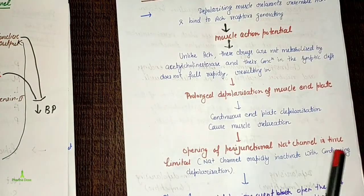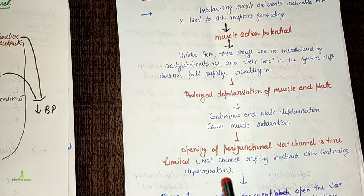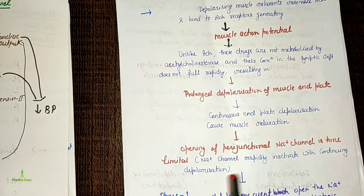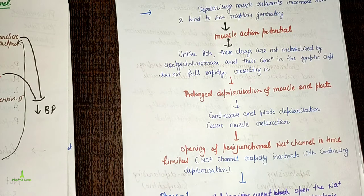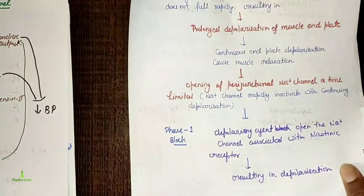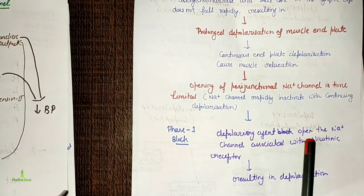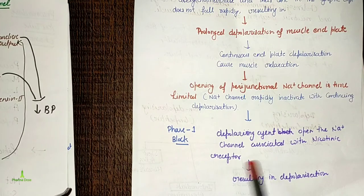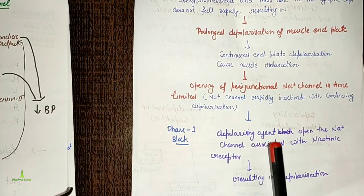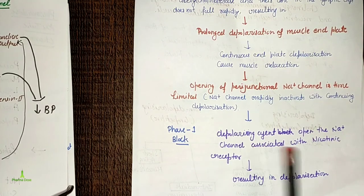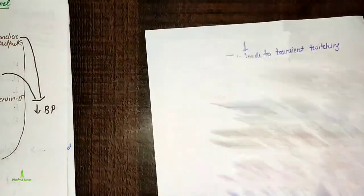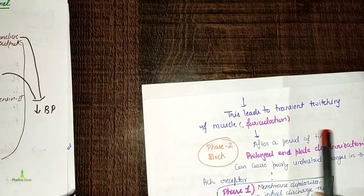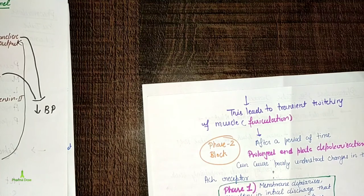The opening of the post-junctional sodium channel is time-limited; sodium channels rapidly inactivate with continuing depolarization. The depolarizing agent opens the sodium channel associated with the nicotinic receptor — this is called Phase 1 blockage.